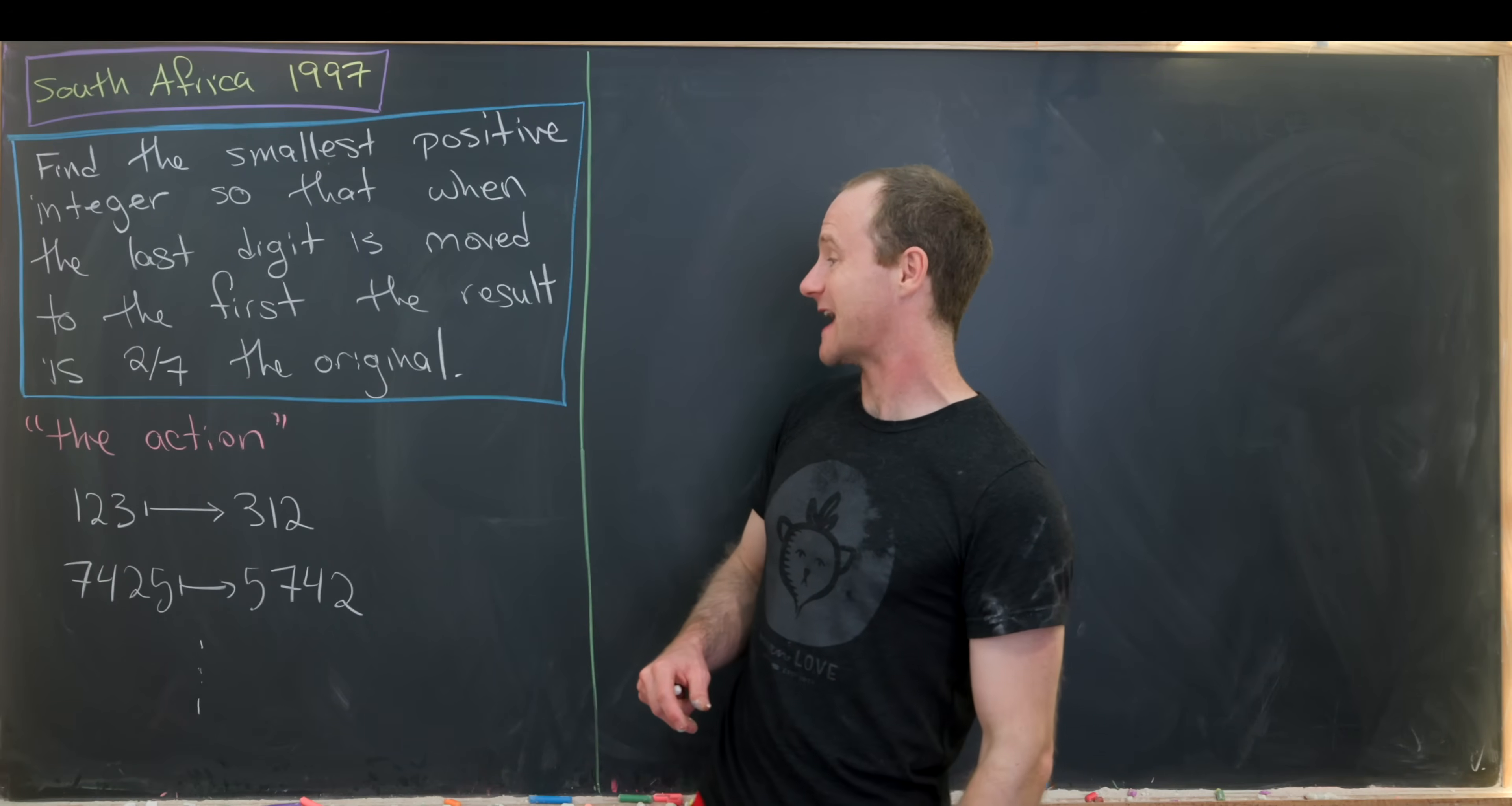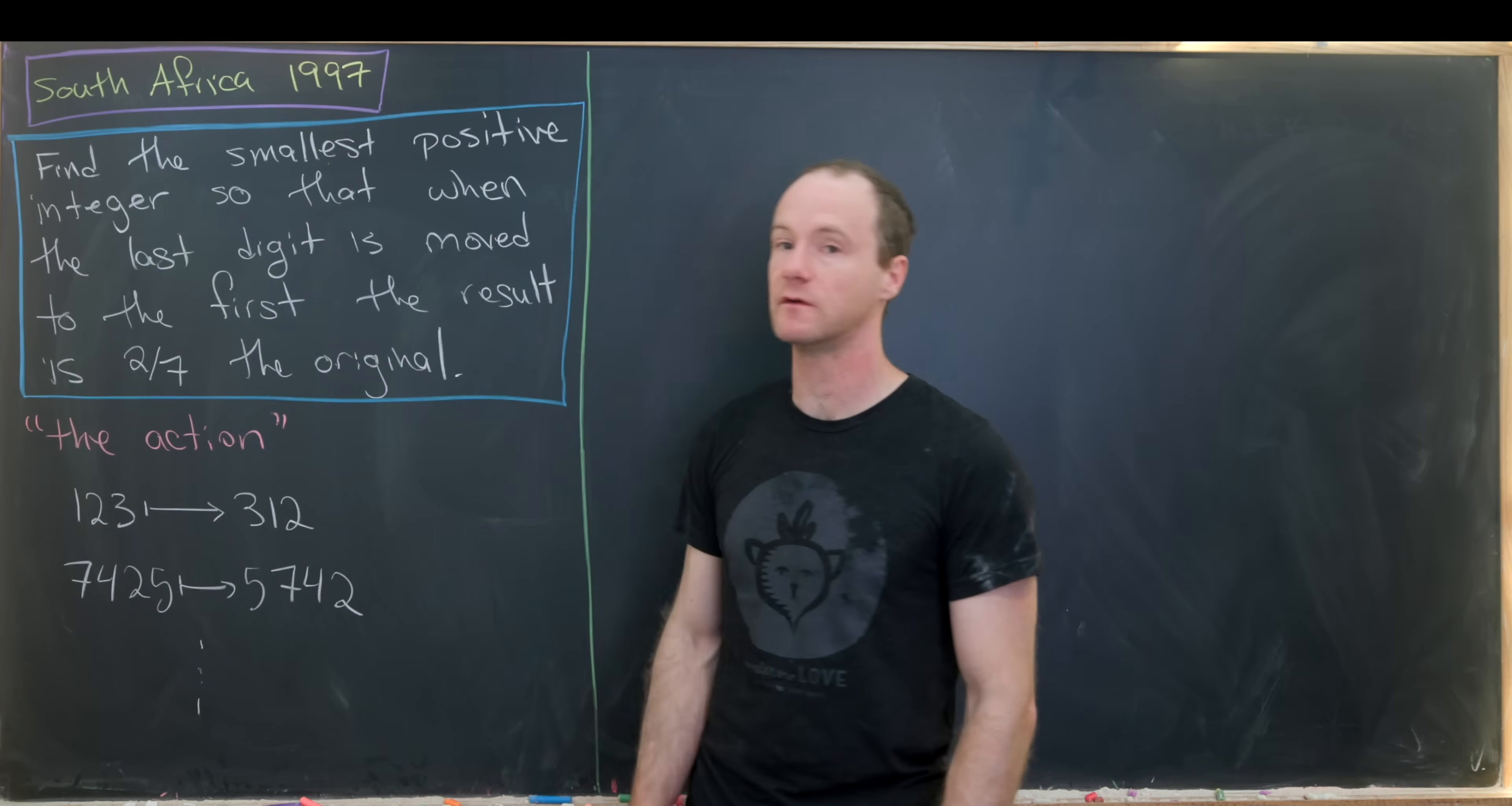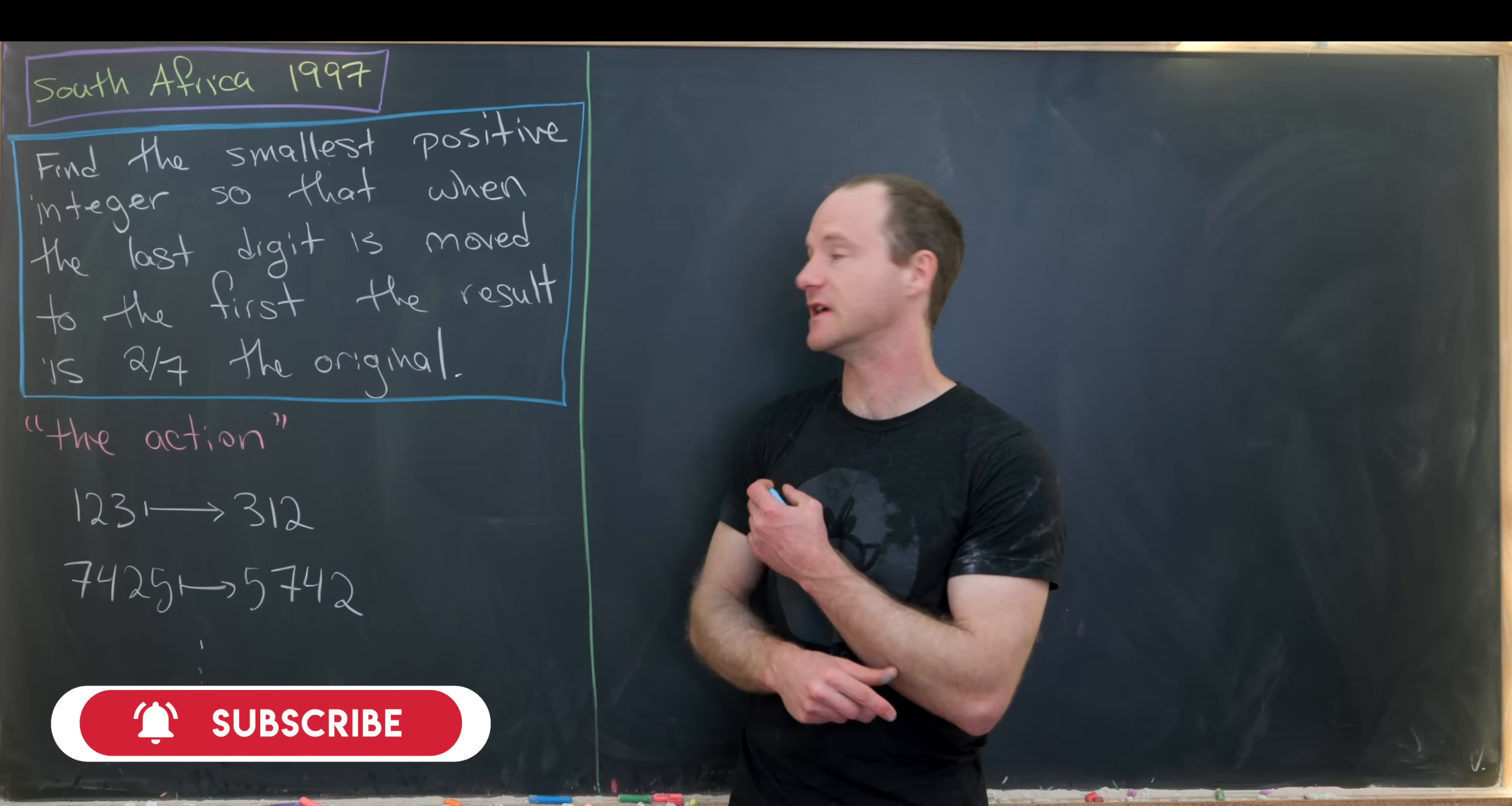So what I mean by that is this action of moving the last digit to the first. And so I've made a couple of examples. We've got the number 123, so the last digit is three. If we move that to the first position, now our number is 312. If we've got the number 7,425, we take the last digit, which is a five, and move it to the beginning, and we've got 5,742. So I think maybe just illustrating it with these very simple examples gives us an idea of what's going on here.